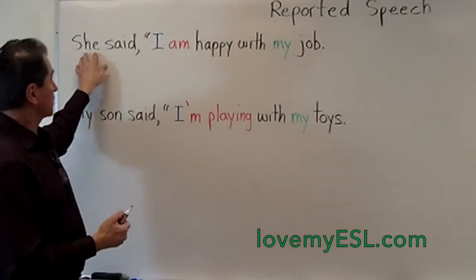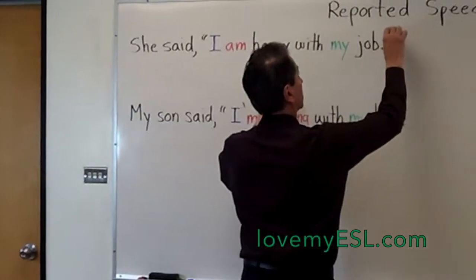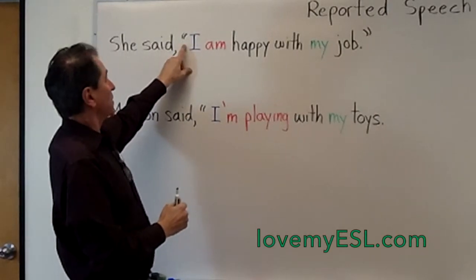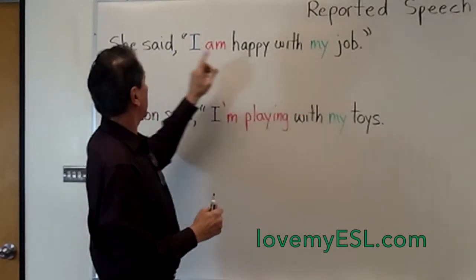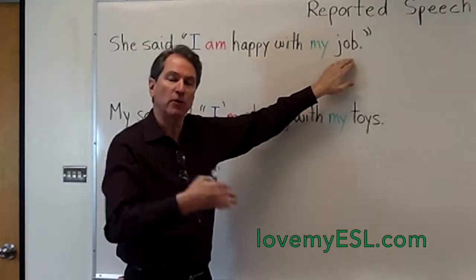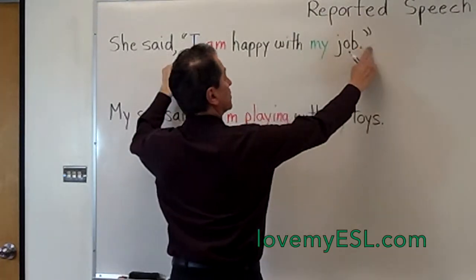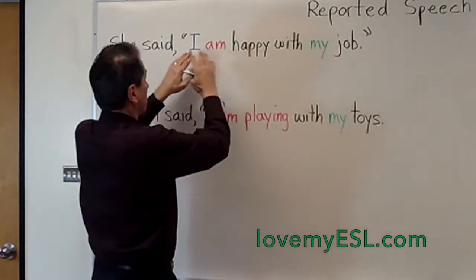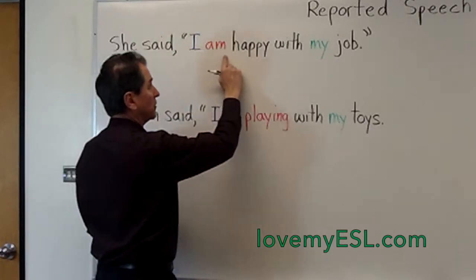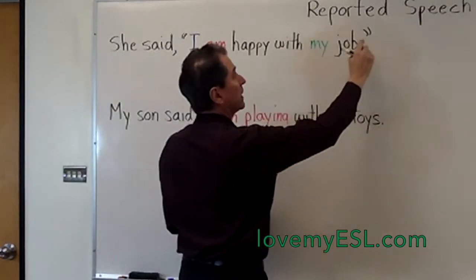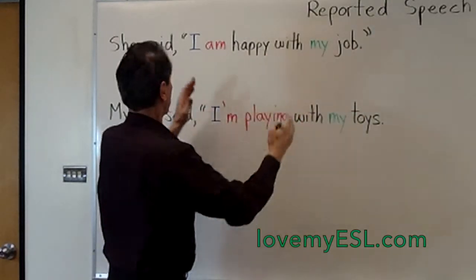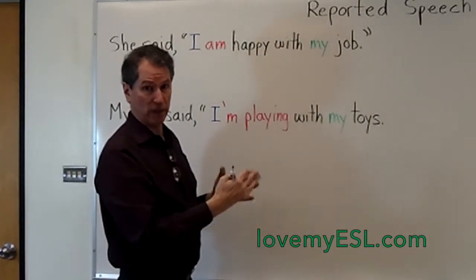This is called quoted speech — it's when you use quotation marks. Better late than never. So quotation marks in front of the words that came out of this person's mouth. So she said, 'I am happy with my job.' That's actually the words that came out of her mouth, so these words are in quotation marks. Notice when you do this kind of quoted speech, you put a comma and then quotation marks, then the words that came out of her mouth, then the period, and then the quotation marks at the very end.